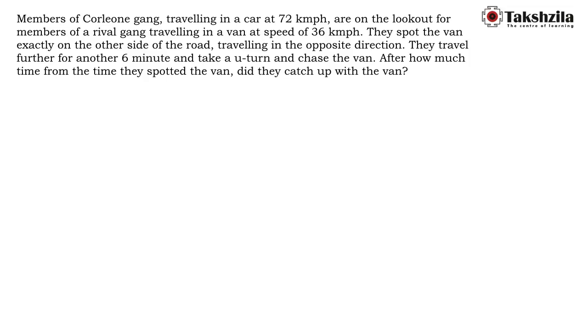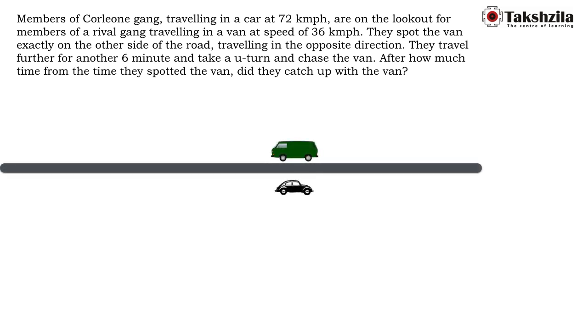I'm assuming you have gone through the question and are well versed with the facts. The question begins with two gangs on opposite sides of the road: the car is the Corleone gang and the van is the rival gang.